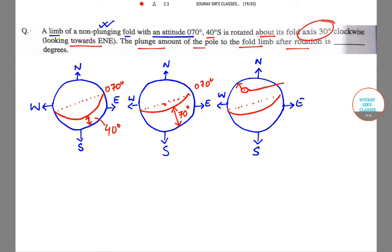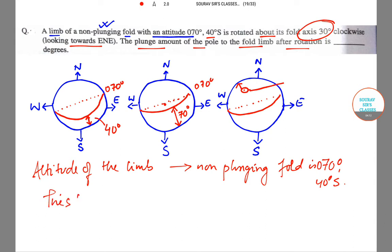So altitude of the limb of non-plunging fold is 70 degree, 40 degree South. This limb can be plotted on stereonet.